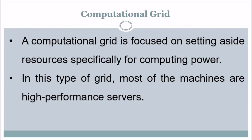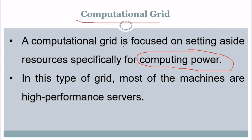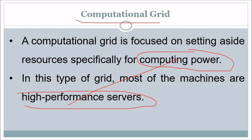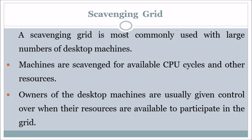The computational grid focuses on setting aside resources specifically for computing power. In this type of grid, most of the machines are high-performance servers, providing great computing power. The scavenging grid is most commonly used with a large number of desktop machines. These machines are scavenged for available CPU cycles and other resources, and owners of the desktop machines are usually given control over when their resources are available to participate in the grid.